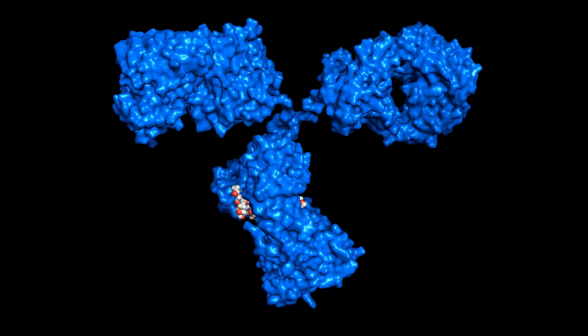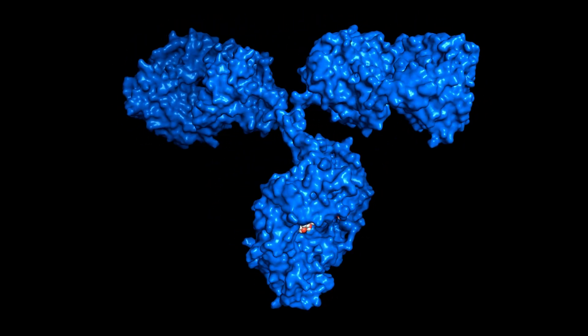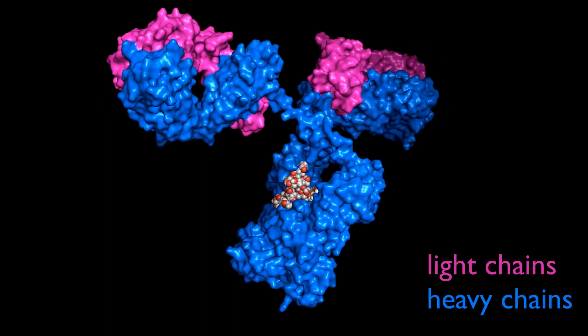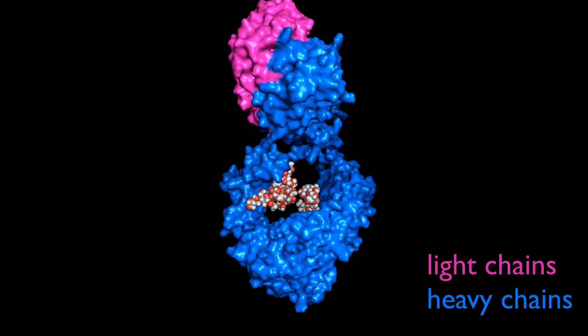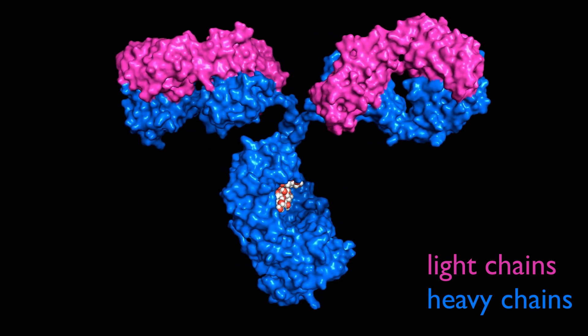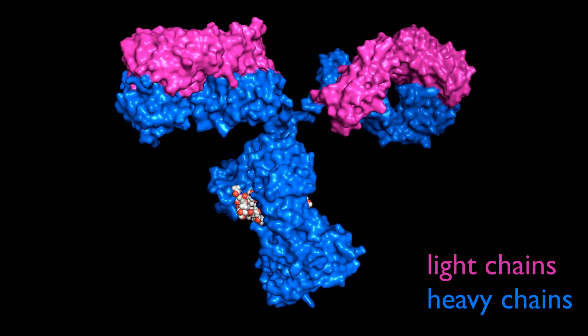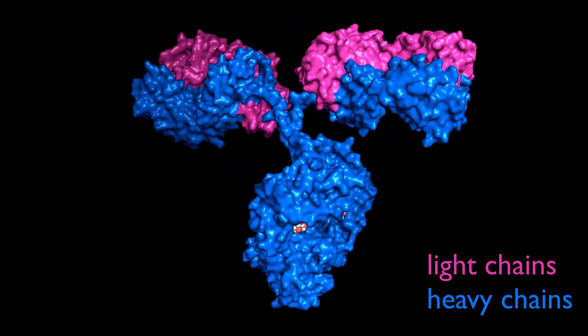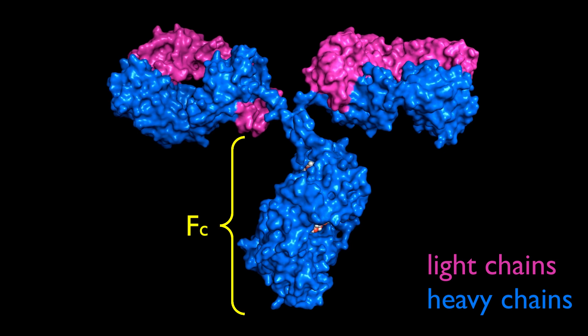The antibody is made up of four different protein chains, two identical light chains, which are shown here in magenta. The two larger chains, shown in blue, contain more amino acid residues and are therefore heavier than the light chains. These heavy chains meet up to form a region called FC.